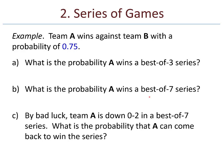Series of games. This is a nice application of the thinking in the Bernoulli theorem — it's not exactly the Bernoulli theorem, but it's pretty close and uses the same kind of thinking. Suppose that team A wins against team B with a probability of 0.75. We might ask: what's the probability that A wins a best-of-three series? Or a best-of-seven series? Or suppose A is down 0 to 2 in a best-of-seven series — what's the probability that A can come back to win?